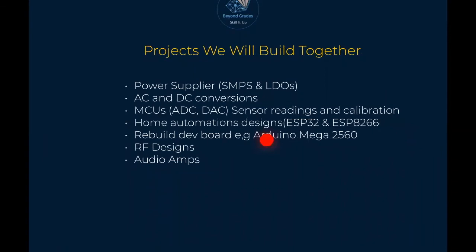Projects we'll build together: we'll start with the basics and fundamentals of power supplies, dealing with SMPS and LDOs, checking the advantages and disadvantages of each, and when to use which for specific applications. For example, why use an LDO — which is less efficient — for RF signals rather than an SMPS? These concepts will be broken down as we do practical implementations, incorporating industrial and manufacturing tips, as well as AC-to-DC conversions and DC regulation to different voltage levels.